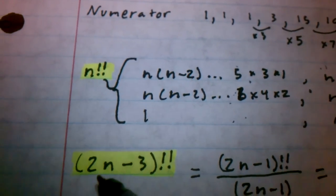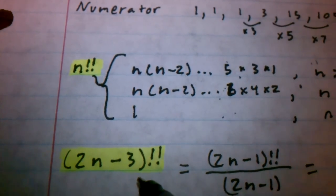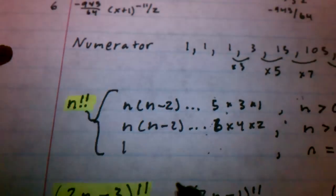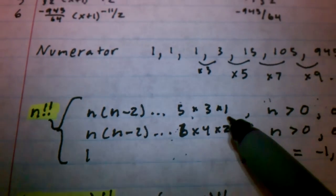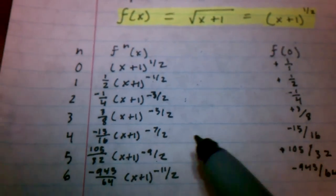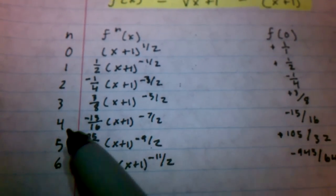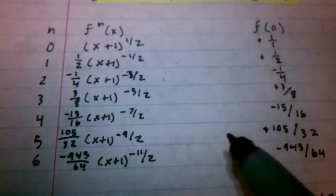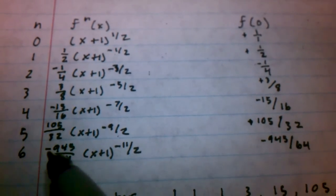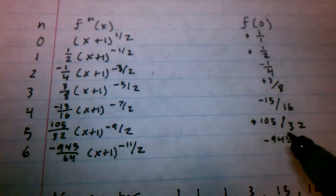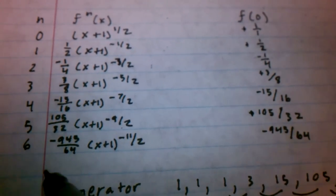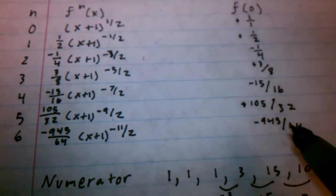If we plug in 2, we get 4 minus 3. If we plug in 3, we get 2 times 3 minus 3, 3 factorial. So, that gives us 3 times 1, which up here gives us the 3. We plug in 4, 2 times 4 is 8, 8 minus 3 is 5, gives us 5 times 3 times 1. We get there, we plug in 5. We, of course, get 7, gives us the 105, 7 times 5 times 3. Of course, 6, we get 9, 945.